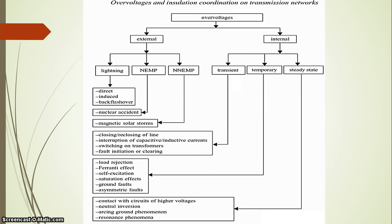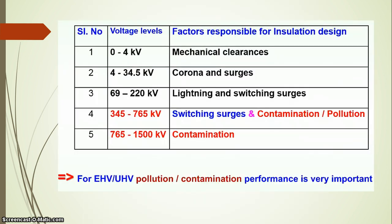We must protect the system from these overvoltages, for which insulators are designed. On a transmission line, there are two types of insulators used to insulate the tower from the line: suspension insulators and strain-type insulators. In substations, insulation is also used over circuit breakers and transformers.